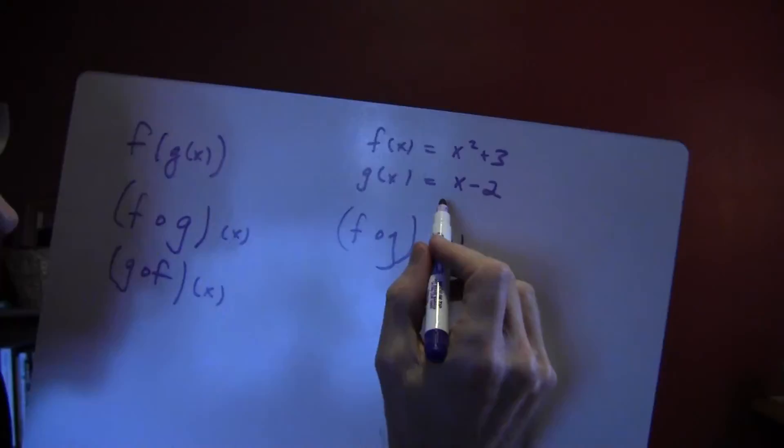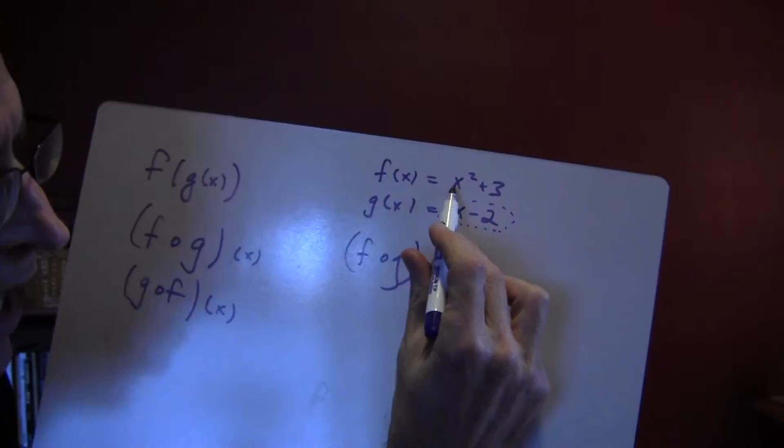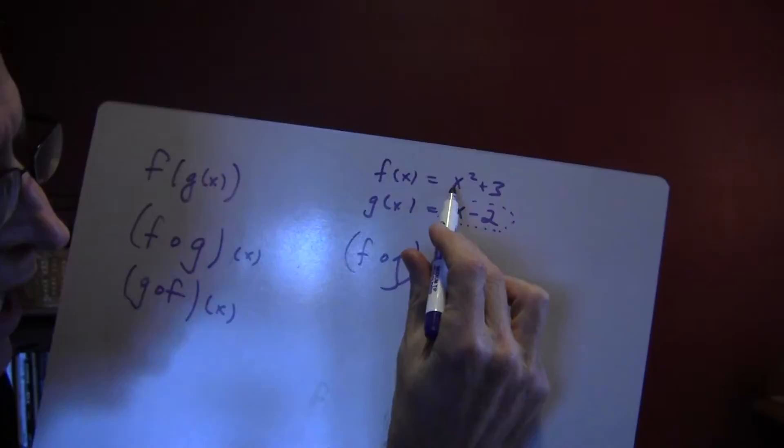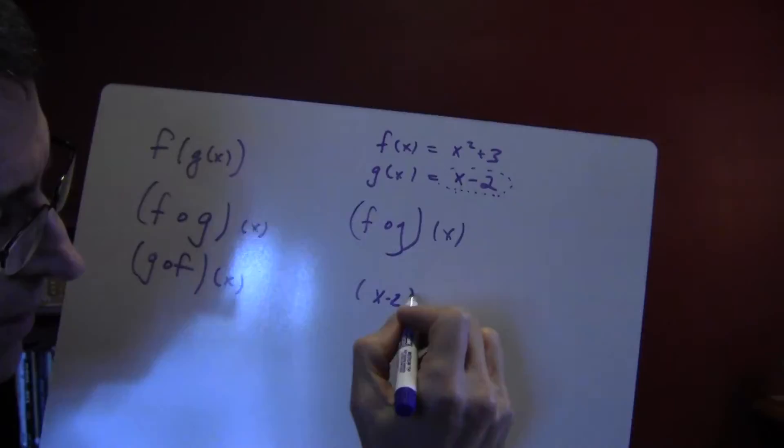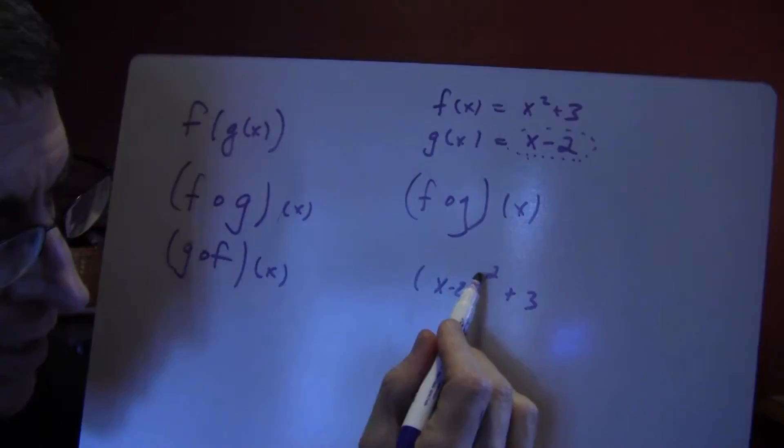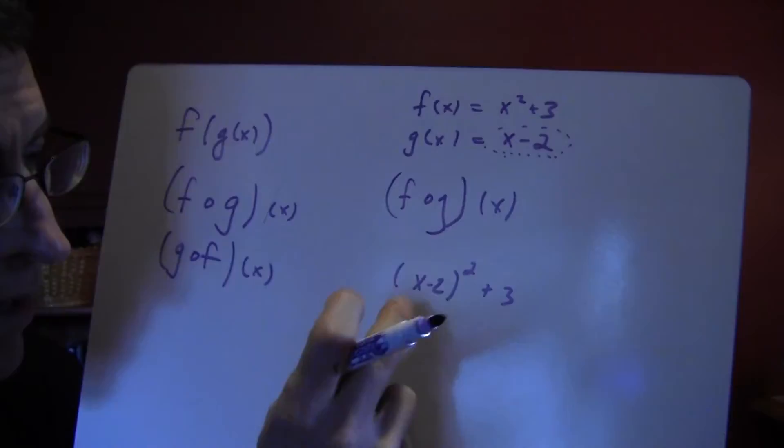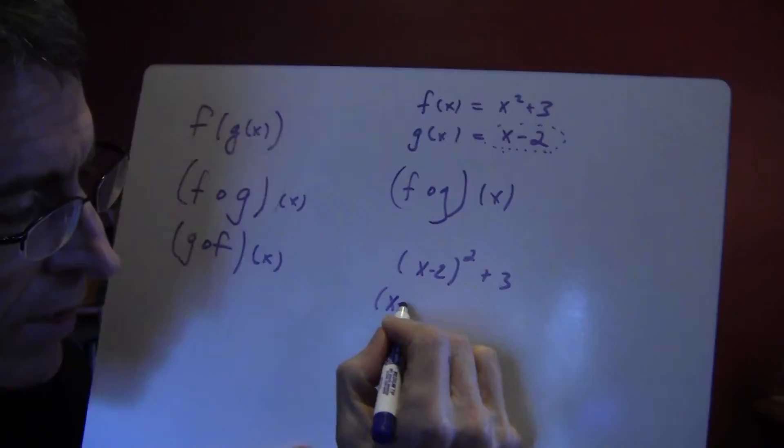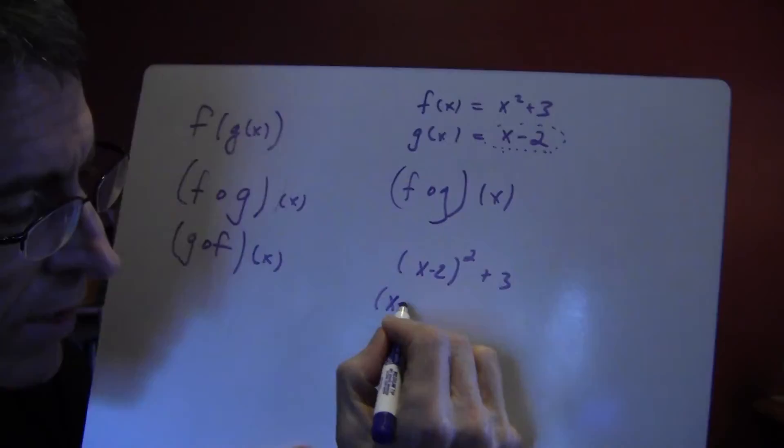And then, you take the entire expression, if you will, the entire function of g and you have to plug it into wherever there's an x inside the f. So, I would rewrite that and I would say, instead of x squared, I put parentheses wherever I'm substituting, and then that squared plus 3. And then that was one thing that a lot of you guys got wrong in the test. Remember, when you have x minus 2 squared, that is not, you cannot take that squared and distribute it because there's a minus inside the parentheses. So, that is a problem when you have to do your FOIL. You have to expand that out.